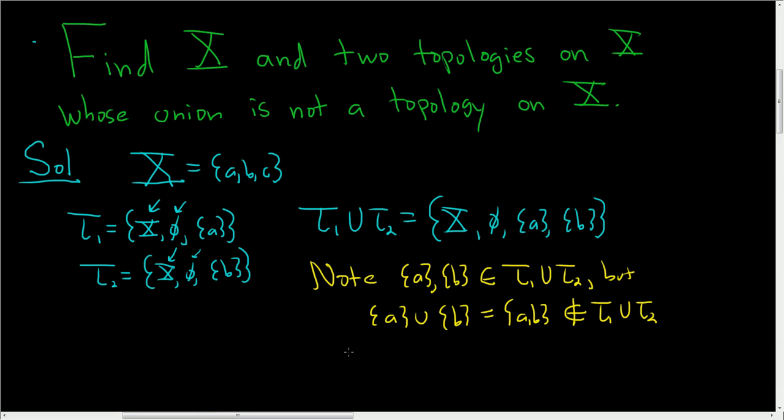So this guy is not a topology on capital X. So not a topology. The union of any number of open sets must also be an open set. In other words, the union of any number of these guys also has to be in this set. So we found two sets whose union is not in here.